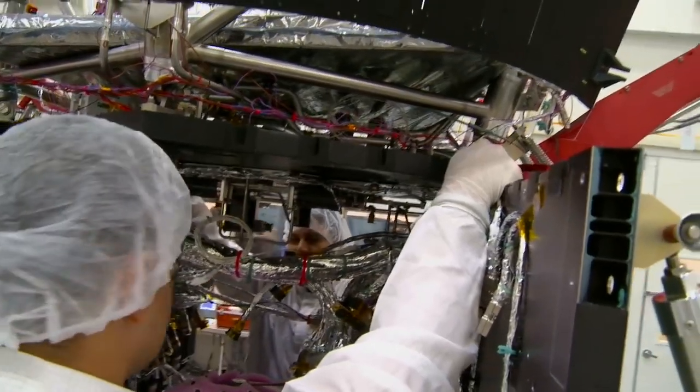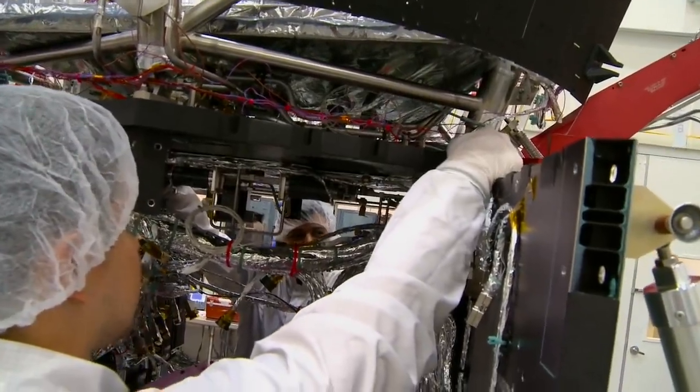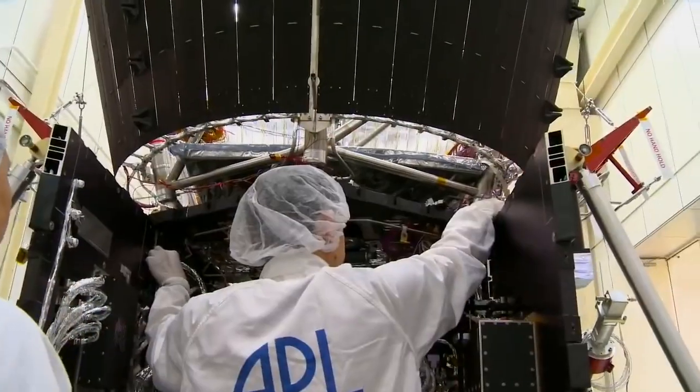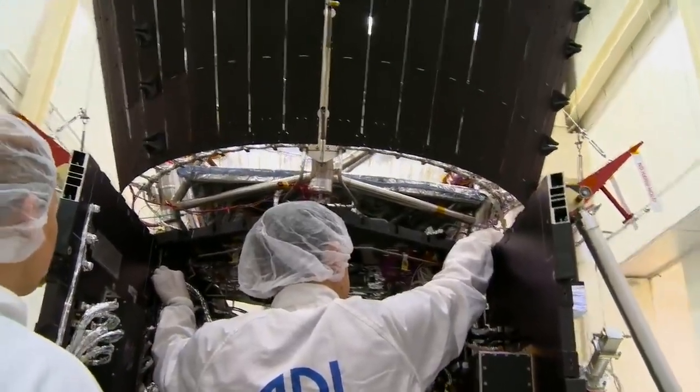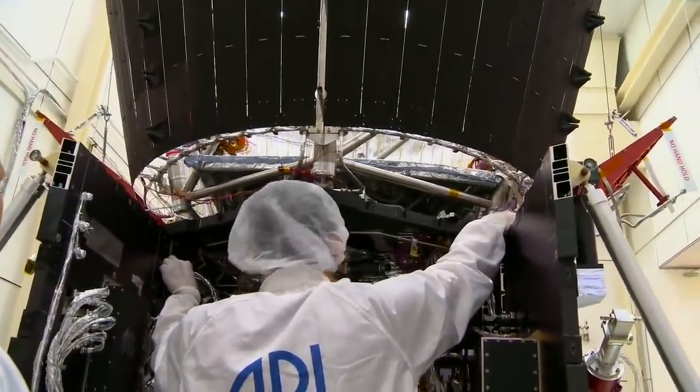So basically water flows behind the solar arrays and into the radiators, and so the water warms up when it's behind the solar cells, and then cools down up at the radiators, and so that heat transfer is happening a lot like the veins in your body.